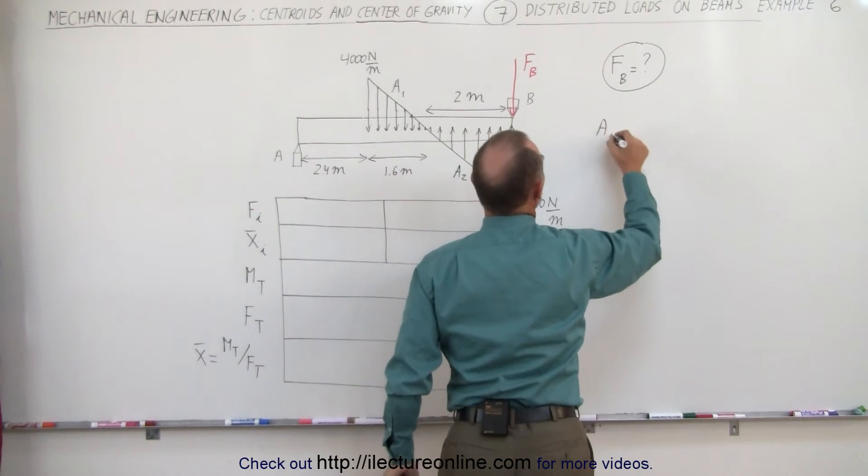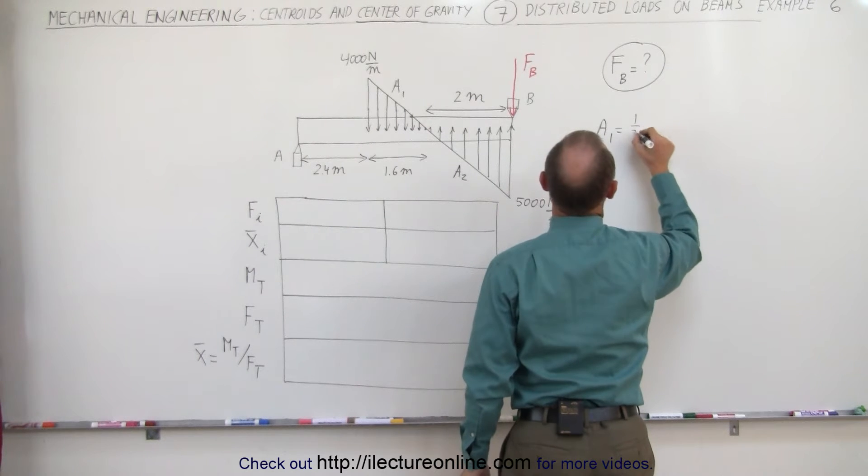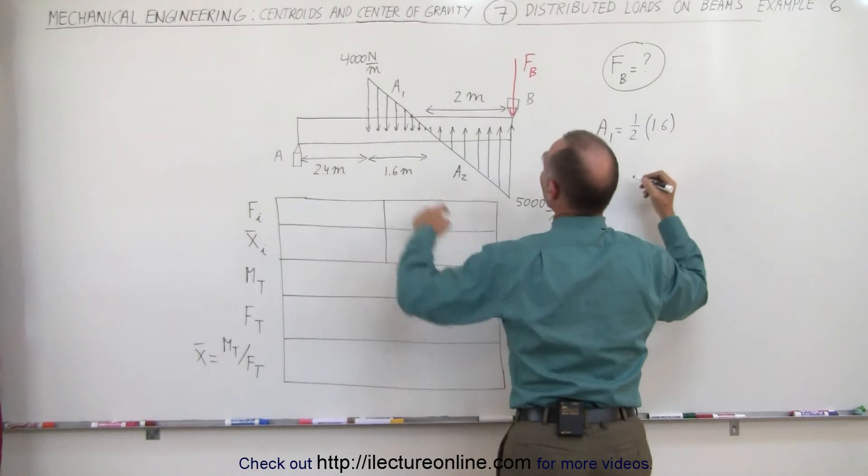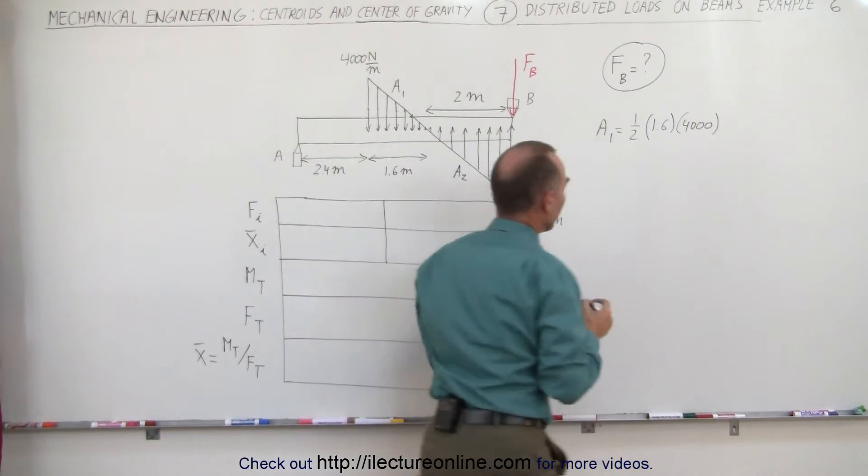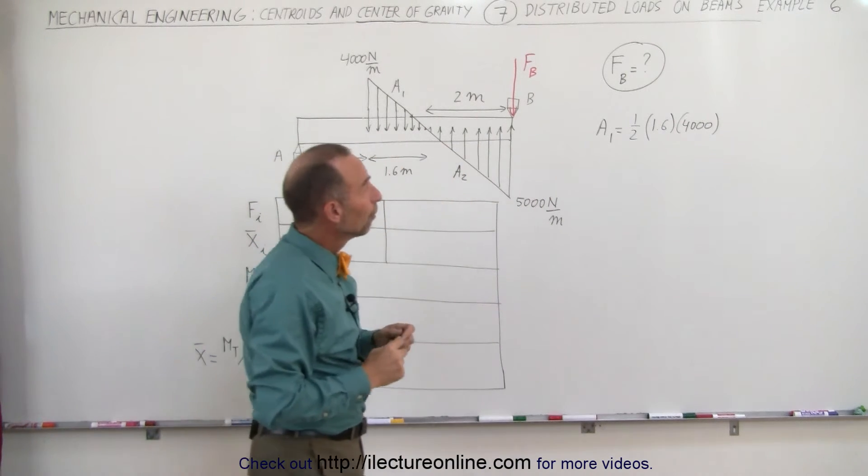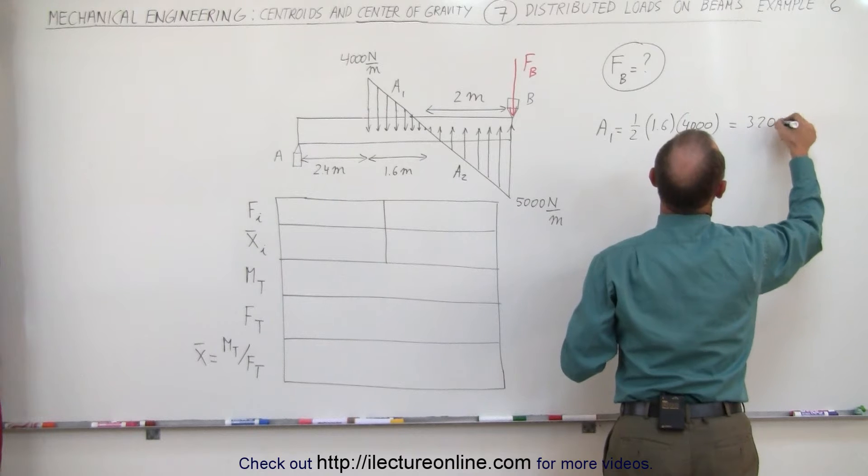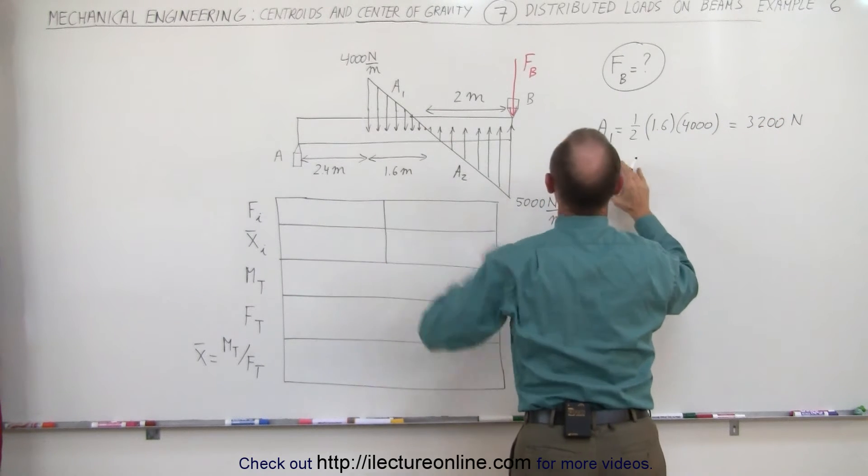A1 is equal to the area of this triangle. It's one-half the base. The base is 1.6 meters and the height is 4,000. That gives us 0.8 times 4,000, which equals 3,200 newtons. That's the total load caused by A1.